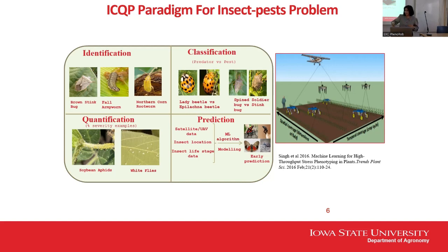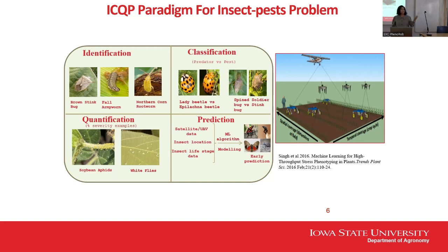The data wasn't sufficient — 30,000 images across 30 species is not big data. However, we can apply this ICQP paradigm to insects too: machine learning can help identify various insects, classify whether they are a pest, predator, pollinator, or decomposer, and we can also use machine learning to quantify. The ICQP paradigm fits perfectly into this context.